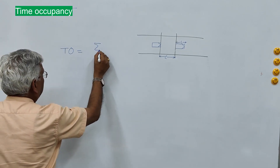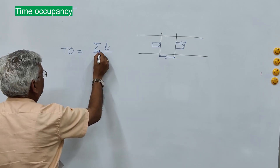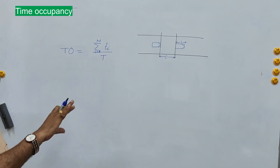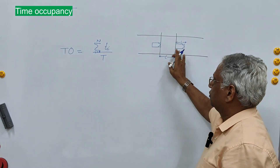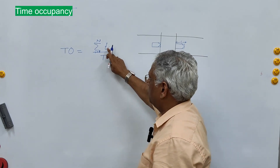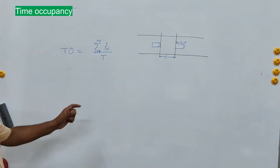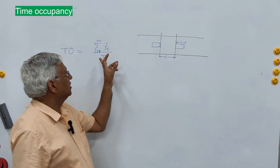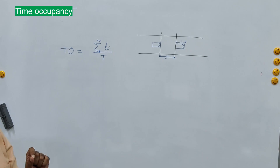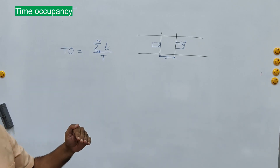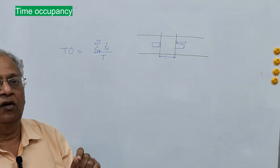Time occupancy T_o is the summation of t_i divided by capital T, where i = 1 to n. So if you take the time taken by n vehicles to clear the detection zone — that is your t_i — the summation of all t_i values divided by total observation time gives time occupancy. Time occupancy is very sensitive to the length of the vehicle, which becomes important in mixed traffic conditions where you have vehicles of different lengths. Therefore it is important to determine the average effective length of the vehicle.